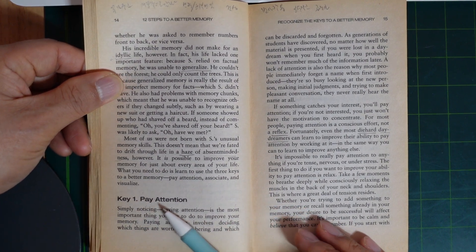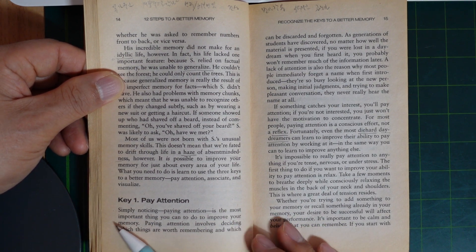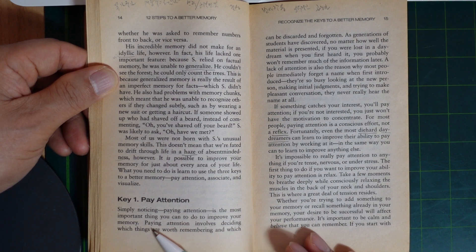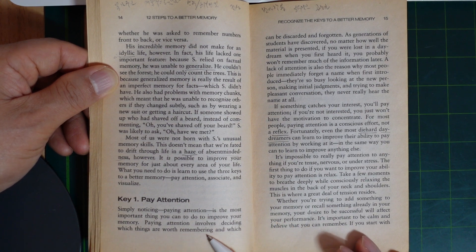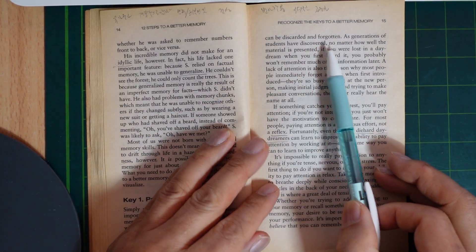Key one: pay attention. Simply noticing, paying attention is the most important thing you can do to improve your memory. Paying attention involves deciding which things are worth remembering and which can be discarded and forgotten.